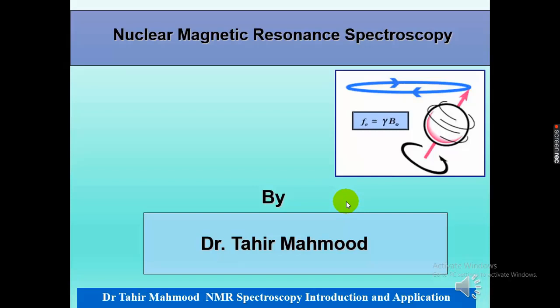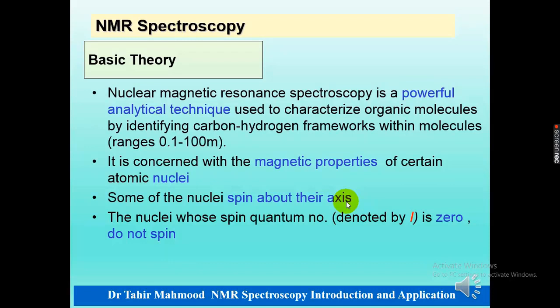I am Dr. Tahir Mahmood and today we will learn about nuclear magnetic resonance spectroscopy. Before going to nuclear magnetic spectroscopy, I will explain some terminologies which we have learned in a previous lecture — that is, what is spectroscopy. Basically, spectroscopy is the electromagnetic interaction of radiation with matter. In the previous lecture, I have already explained what is UV-visible spectroscopy and IR spectroscopy.